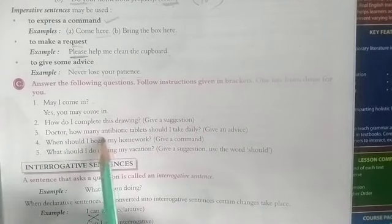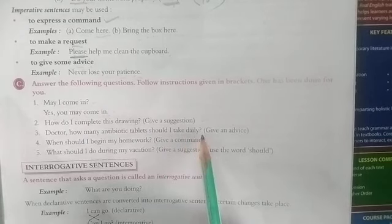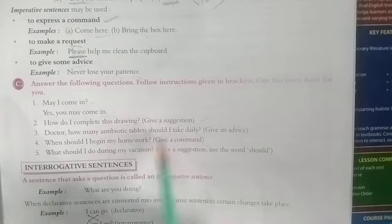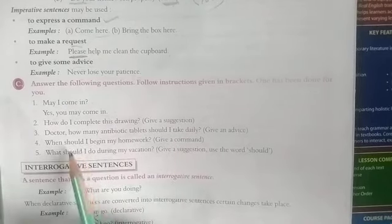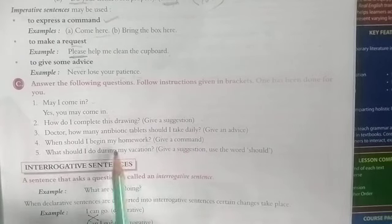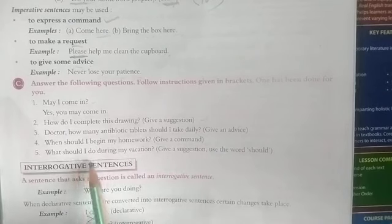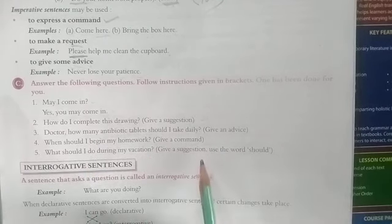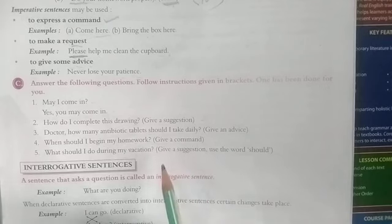Number three: 'Doctor, how many antibiotic tablets should I take daily?' — give advice. The answer is: 'You should take two antibiotic tablets daily.' Number four: 'When should I begin my homework?' — give a command. Answer: 'Begin your homework now only.' Number five: 'What should I do during my vacation?' — give a suggestion. Answer: 'You should use your free time for creating new things.'